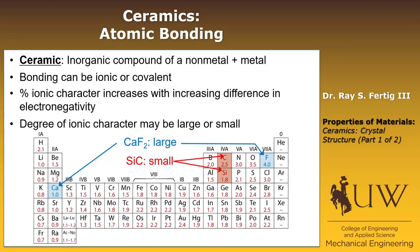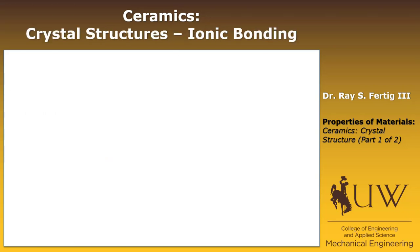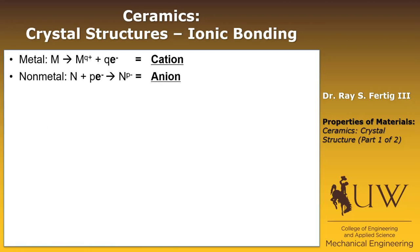Now we're going to talk about the ionic case, where we can treat the individual atoms as ions. What happens is that the metal gives up its electron and becomes a positively charged ion that we call a cation. And the nonmetal accepts that electron, becomes a negatively charged ion that we call an anion. So everything is going to be about the anions and cations in this ionic ceramic structure.